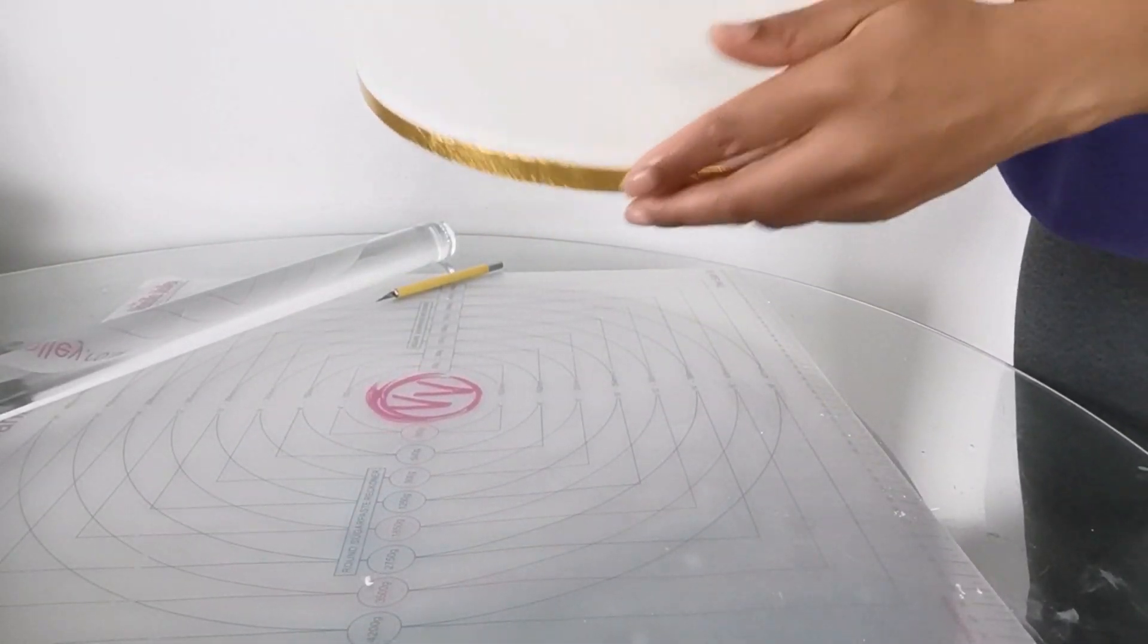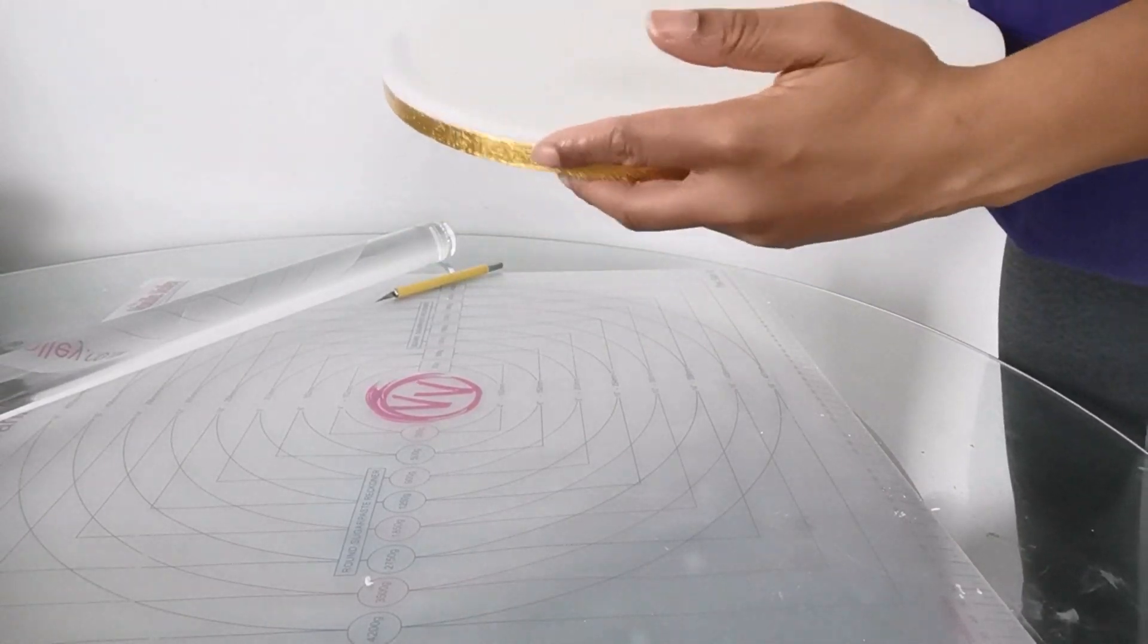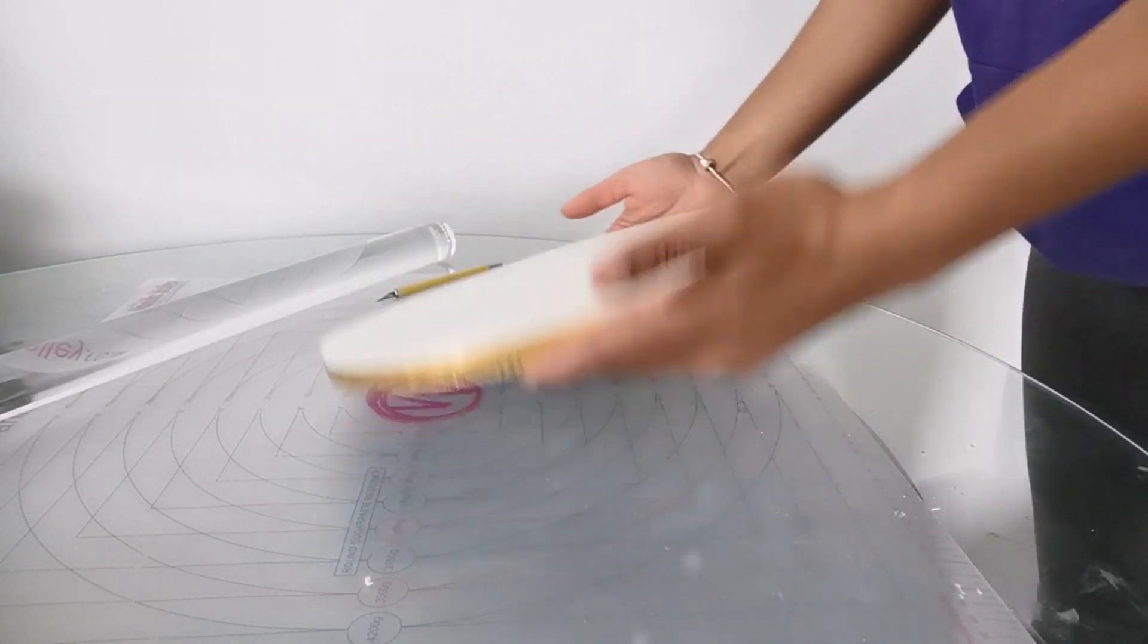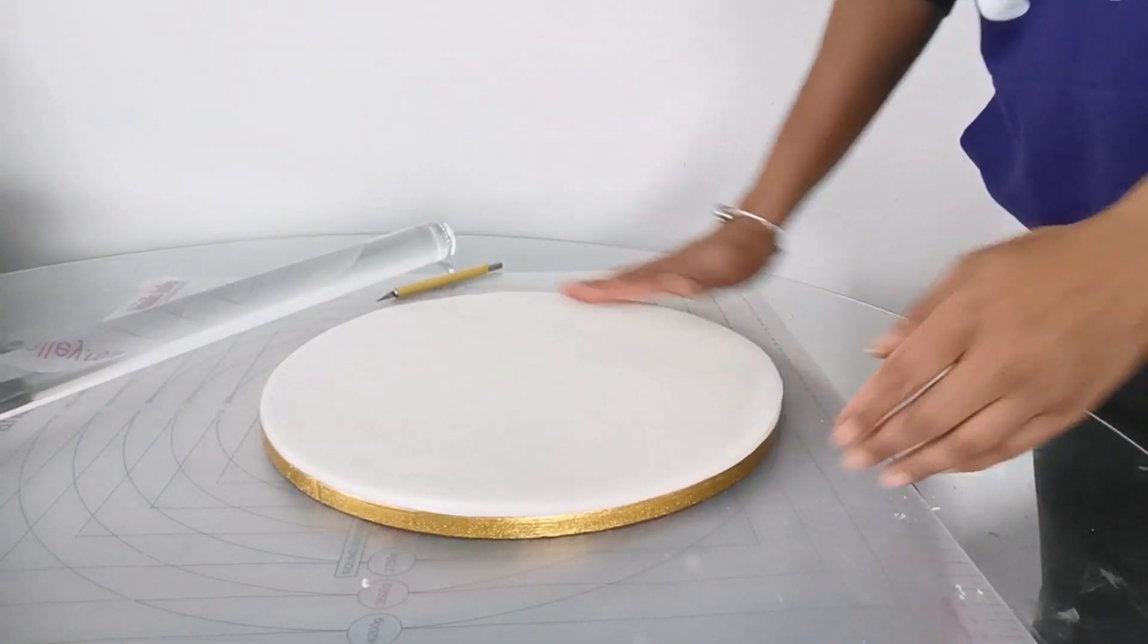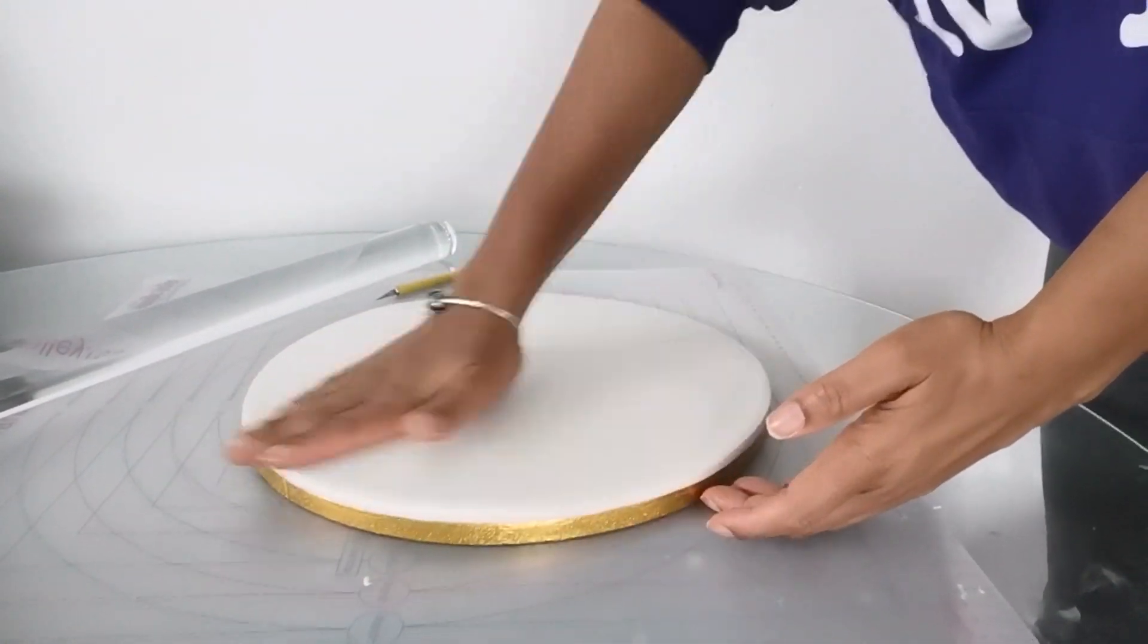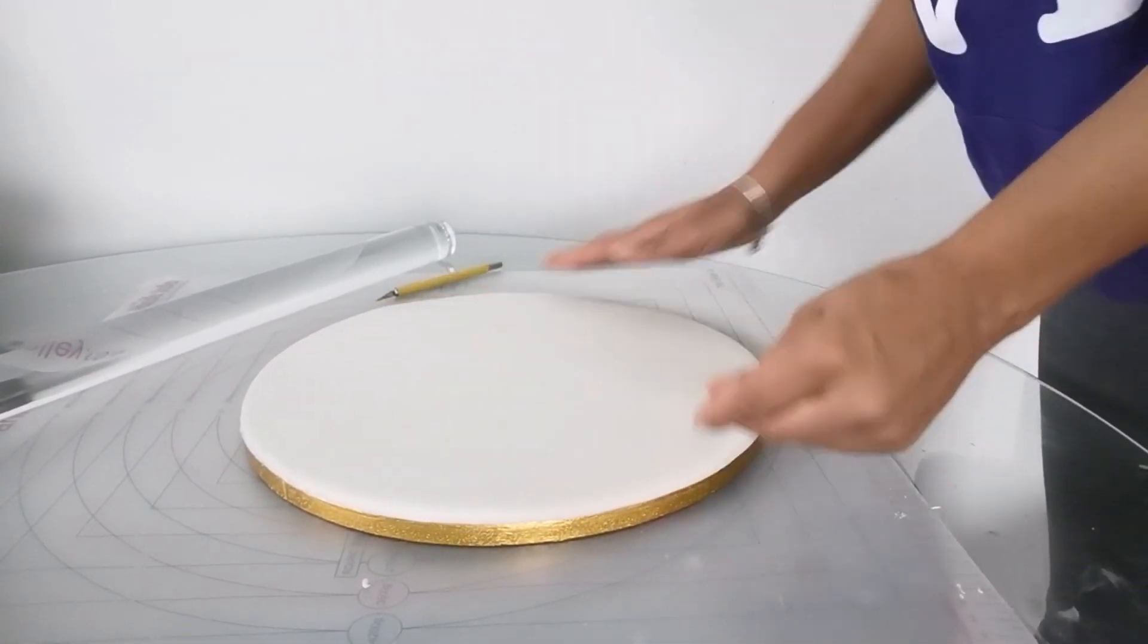Here I'm using my finger to clean up the edges of the sugar paste, making sure it's flush with the board. Then I'm going to use the palm of my hand to smooth it out again and rub out any imperfections.